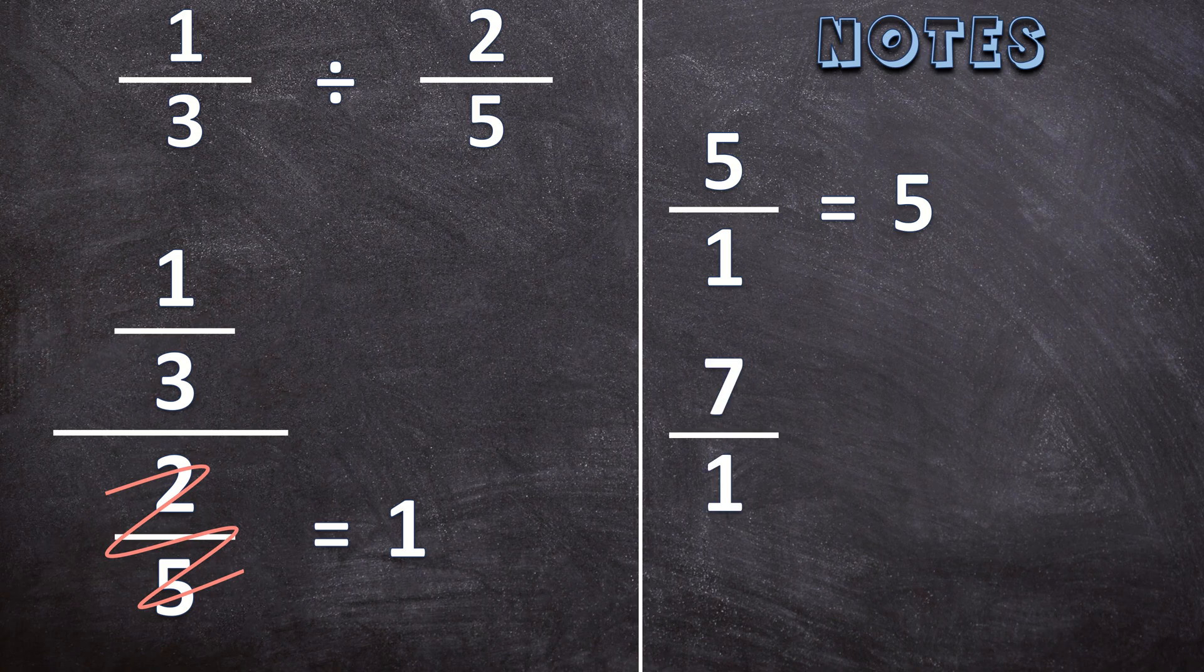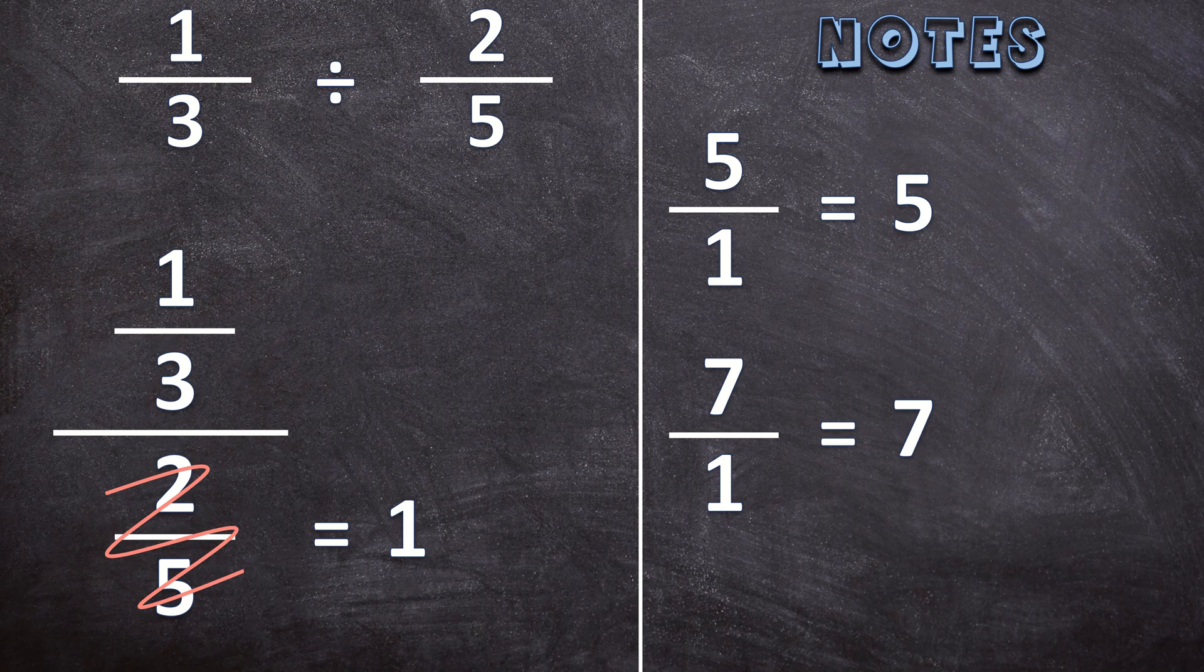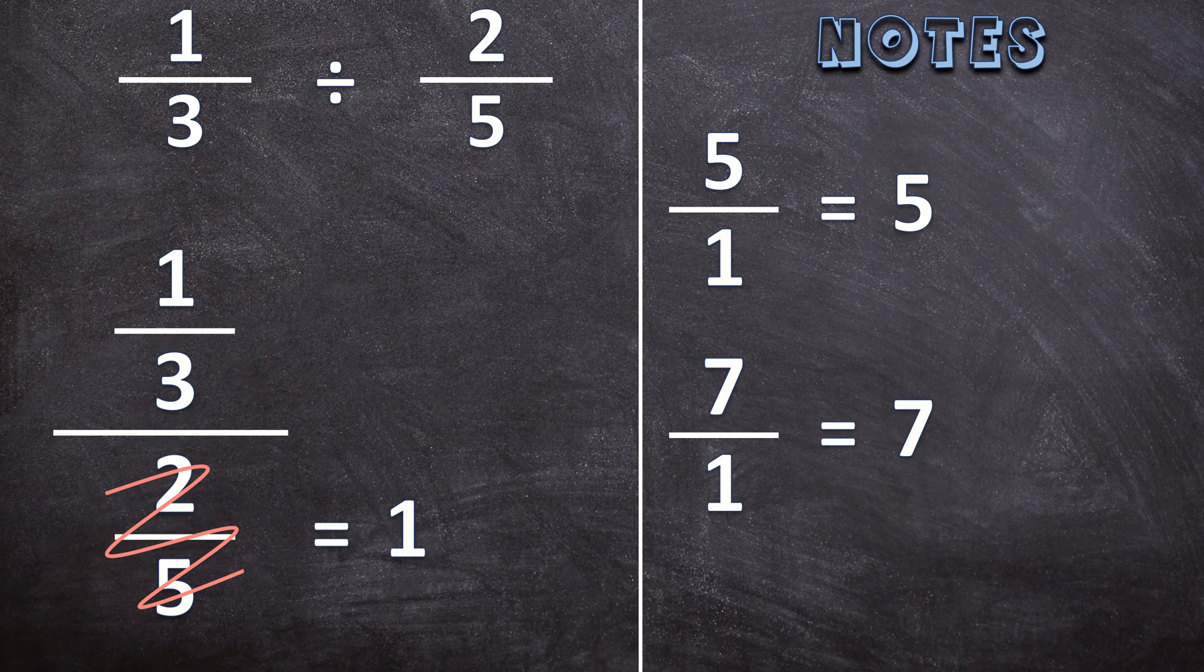Let's have another example. 7 over 1 is going to be 7. So that's why we want the denominator to be 1 so that we know the numerator is just going to be itself if it's over 1.